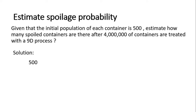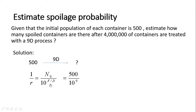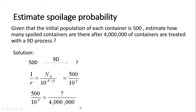Given that the initial population is 500, how many spoiled containers are there after 4 million containers are treated with a 9D process? First, write out what the process is and what we are finding. Then use the equation we've just learned. Since it's a 9D process, substitute F/D with 9 and fill in the initial population of 500. The left-hand side represents the spoilage probability after the 9D process, while the right-hand side represents the number of spoiled containers among the total batch. The answer is 2.